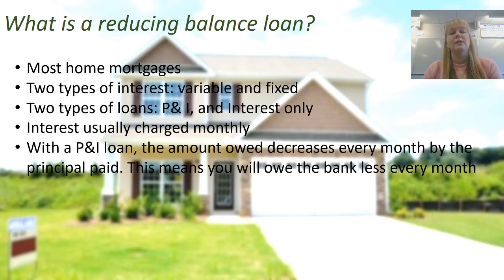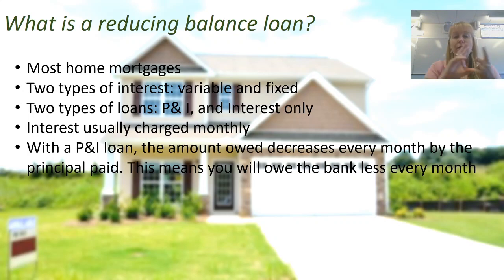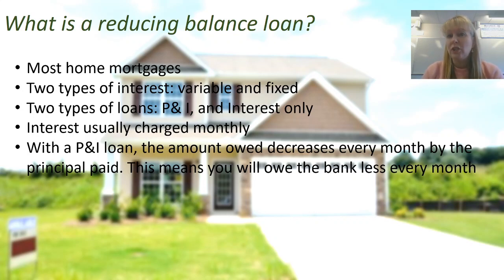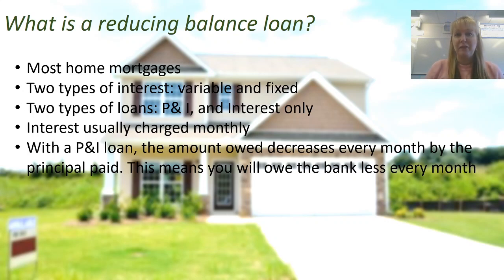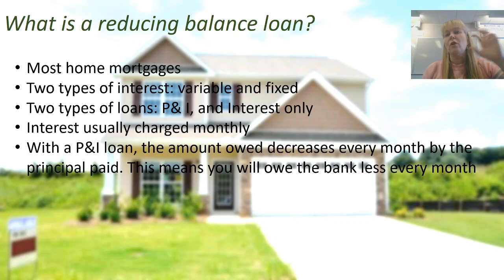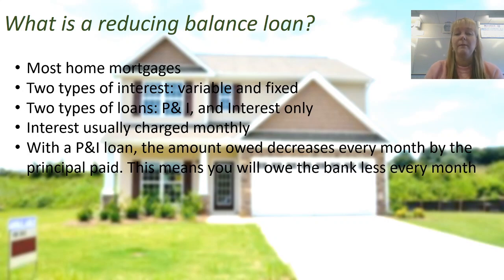With a principal and interest loan, every month the amount you owe the bank decreases by the amount of principal you pay off. Every repayment is made up of a component of principal and a component of interest. Let's say we took out half a million dollars to buy a home — it wouldn't be fair to charge interest on the full $500,000 for 40 years and then have to pay it all back at the end. So we pay off bits and pieces as we go, and that balance reduces every single time we make a repayment, which means we owe the bank less each time.